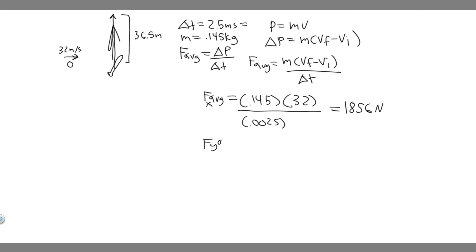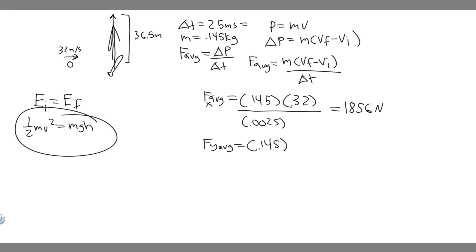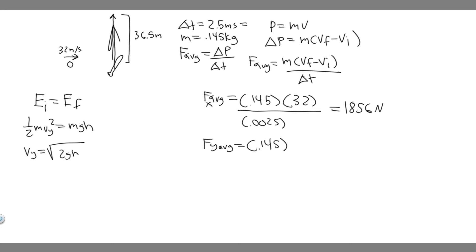Now we need the average force in the y — same formula, mass 0.145. We aren't directly given the velocity in y, so we'll solve using energy conservation. Energy initial equals energy final: one-half mv² equals mgh. Solving for velocity, the masses cancel, and we get v_y equals the square root of 2gh.